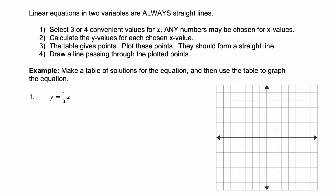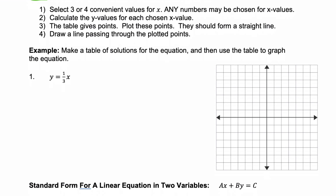Now let's look specifically at linear equations. Linear means a line, so linear equations in two variables always graph as straight lines. To find solutions, select three or four convenient values of x — values that are easy to plug in and solve for y. Then calculate the y value for each x you chose. Use the table you've created to get points, plot those points, and since it's linear they should form a straight line. Then connect the dots.